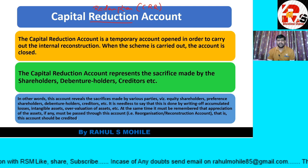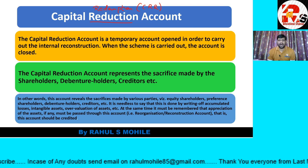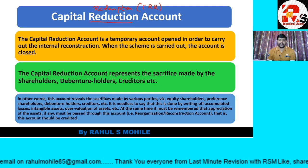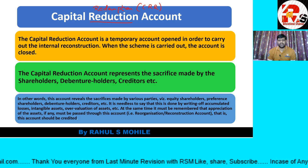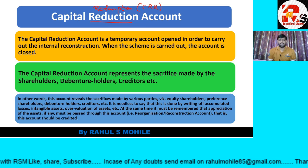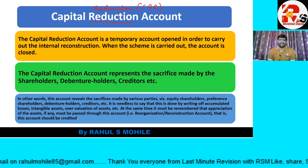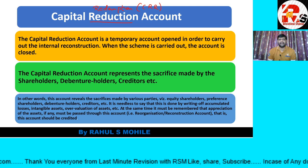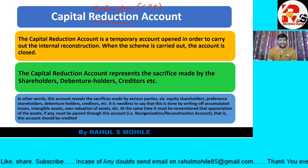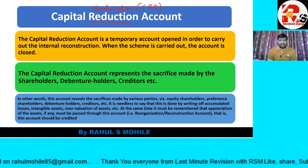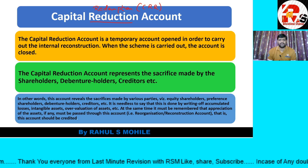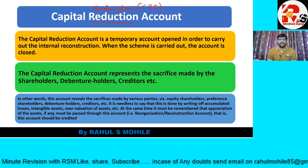Whenever there is any reduction in this chapter, it goes to Capital Reduction Account. For example, if we had debenture holders worth one lakh rupees and we settled them for 80,000 cash, then the 20,000 difference is a profit for us. This profit is transferred to a separate account called Capital Reduction Account. So any profit or loss in this chapter is transferred to this account.